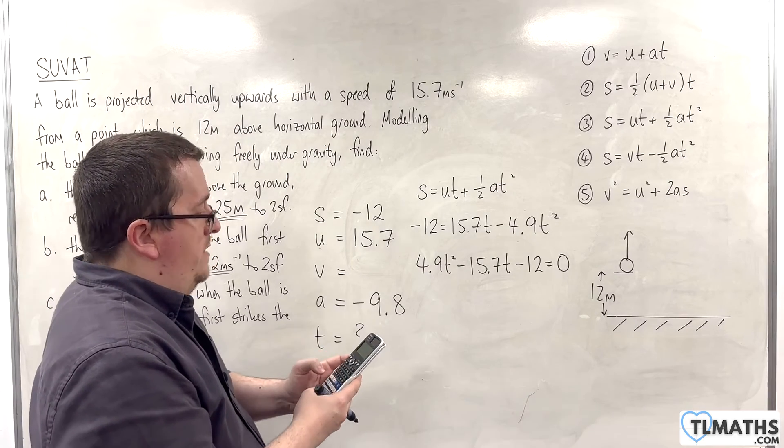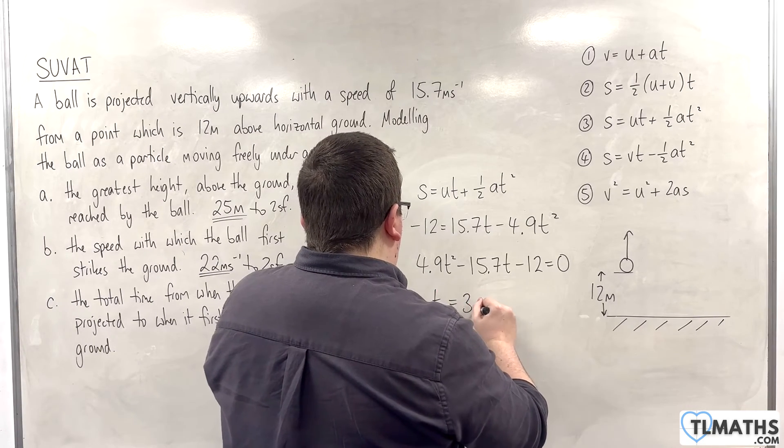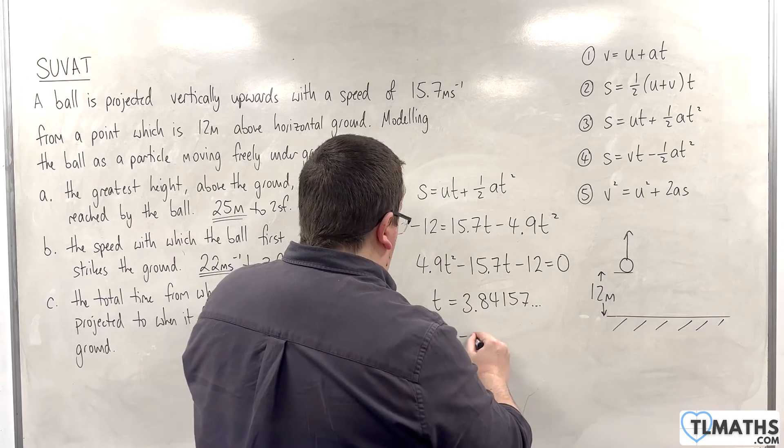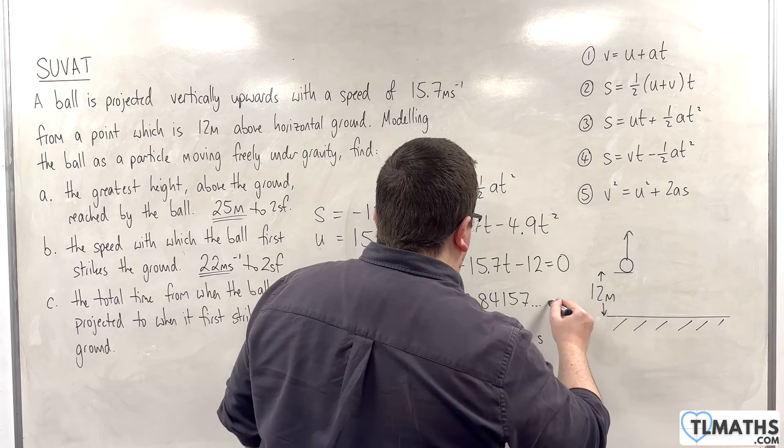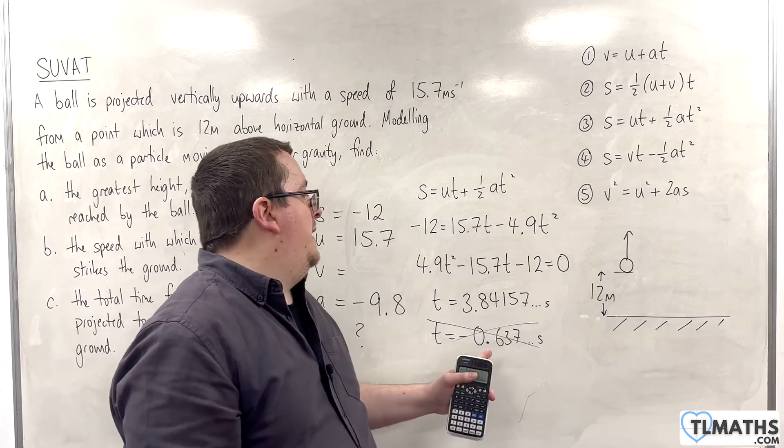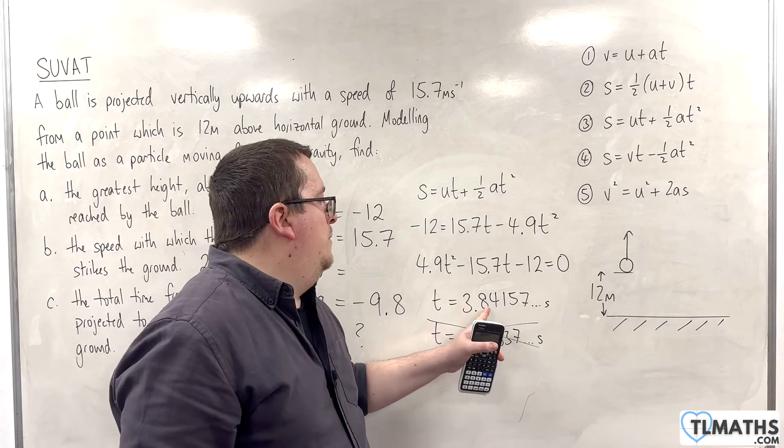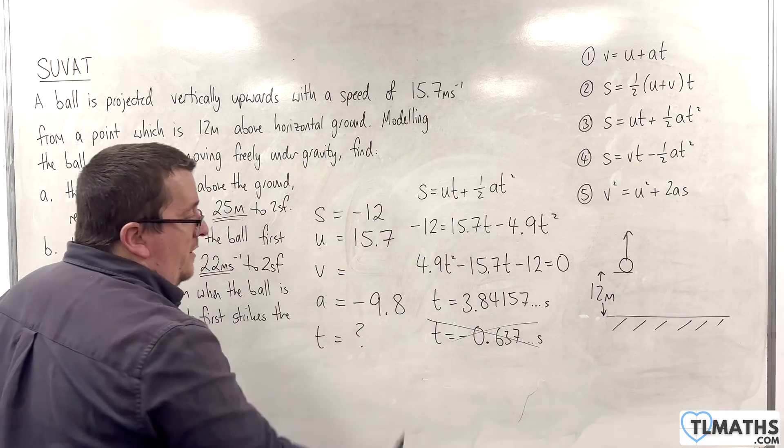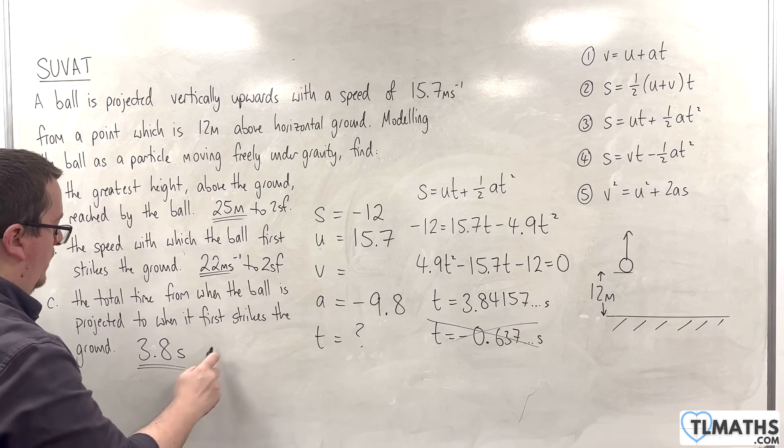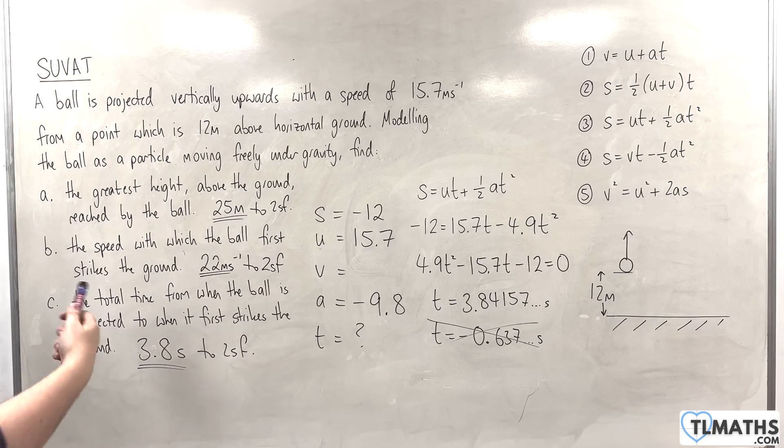So, we have 4.9 minus 15.7 minus 12. And we get T is 3.84157 seconds. And the other result is negative, minus 0.637 seconds, which, of course, we must discount, because we're not having negative time. That would suppose that it hits the ground before it was projected. So, ignore that. This is our answer, but we need to round it to two significant figures. So, we need 3.8 seconds to two significant figures. That's the total time for when the ball is projected to when it first strikes the ground.